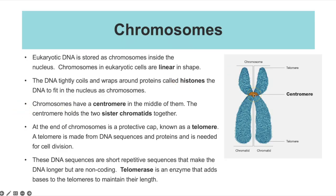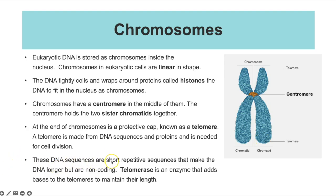Chromosomes also have a centromere, which is the pinching part in the middle. After DNA replication a chromosome is made up of two sister chromatids. Before replication it looks like a single stick-like structure. The role of the centromere is to hold together those two sister chromatids. At the ends of chromosomes you have telomeres — a protective cap of repetitive DNA sequences and proteins that protect the coding DNA during cell division. Telomerase is an enzyme that adds bases to the telomeres to help maintain their length.